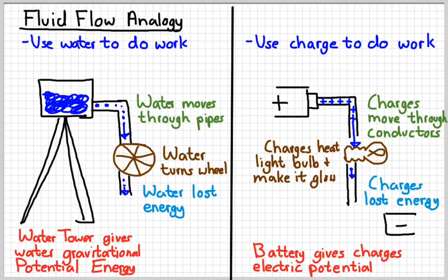And so you can think of charges moving through wires as water moving through a pipe. And you can think of a glowing light bulb as being an analogy to water turning a water wheel. And then in the end, there would be no energy left over because all the energy would be lost to either the water wheel or the light bulb.